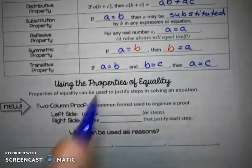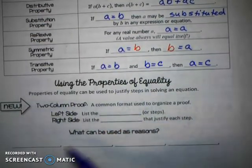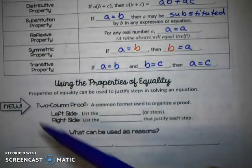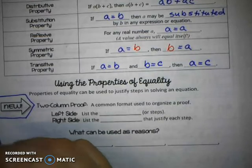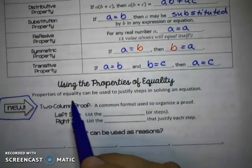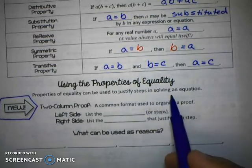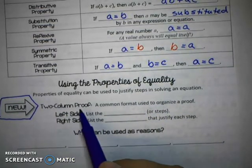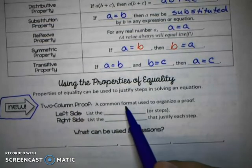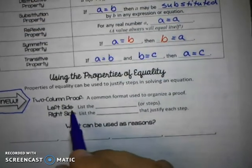So, we're going to use the properties of equality in some of this new work here. So, this is our new concept of a proof. The properties of equality can be used to justify steps in solving equations. So, we're going to work on doing that in what we call a two-column proof. A common format used to organize a proof.